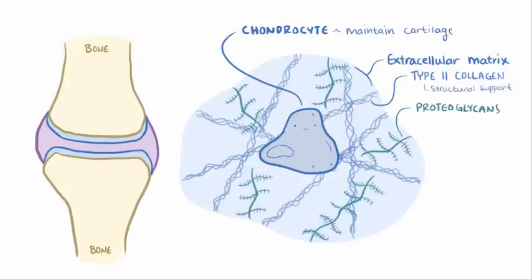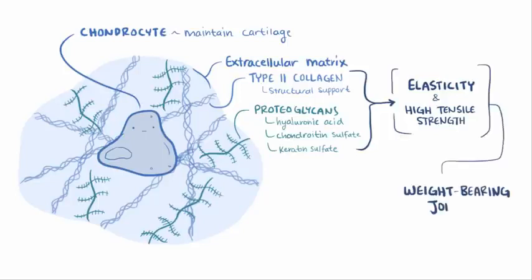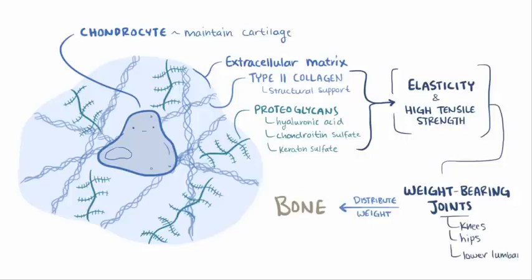These are aggregates of protein and sugar molecules like hyaluronic acid, chondroitin sulfate, and keratin sulfate. All of these extracellular components give the cartilage elasticity and high tensile strength, which help weight-bearing joints distribute weight such that the underlying bone absorbs the shock and the weight, and these are joints like the knees, the hips, and the lower lumbar spine.